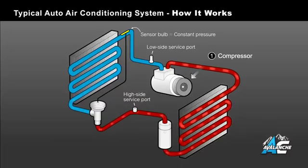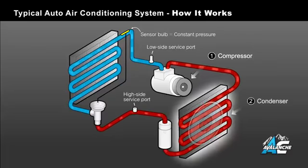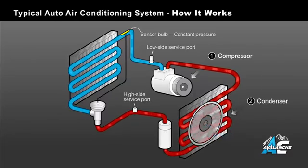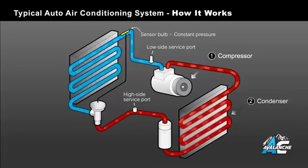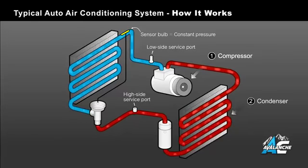This high pressure high temperature gas is shown as red with bubbles indicating it's in a gas state. The condenser does just that — cool air flows across the condenser, cooling the high pressure high temperature gas and turning it into a high pressure liquid. As you can see, the gas remains red indicating high pressure, but changes to arrows indicating it's changed to a liquid.